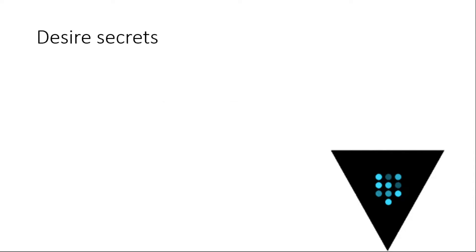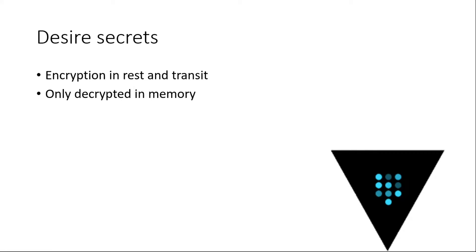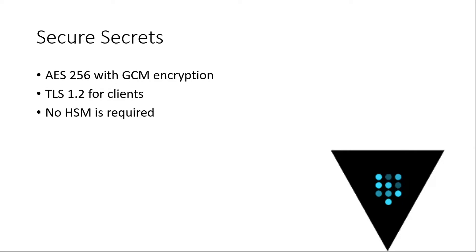What is the desired state of a secret? It has to be encrypted at rest and in transit, and only decrypted in memory when you need to use it. It has access control over it, and you can rotate and revoke the secret — basically if you need to change it, you should easily be able to do so.